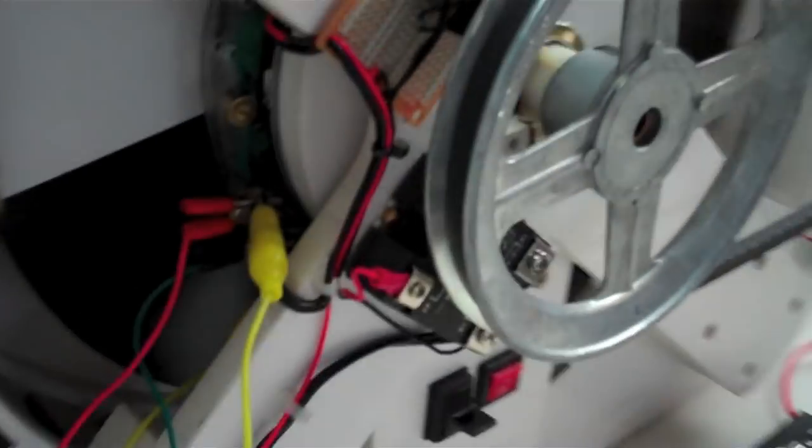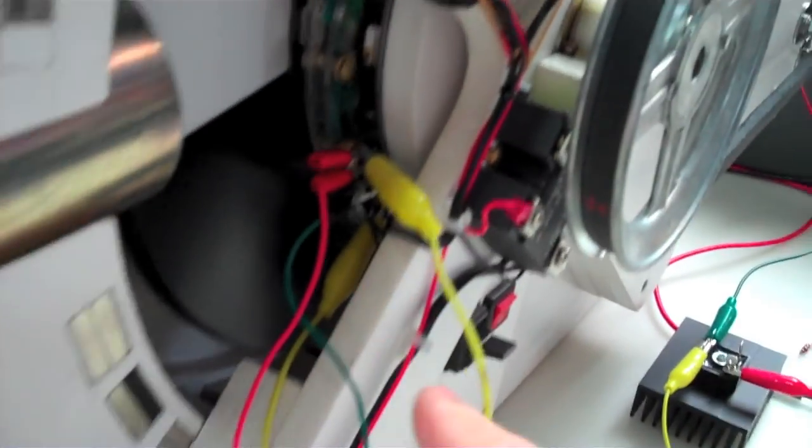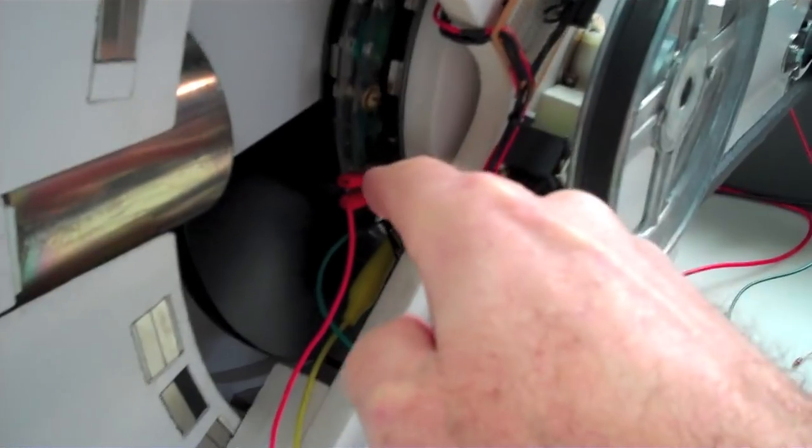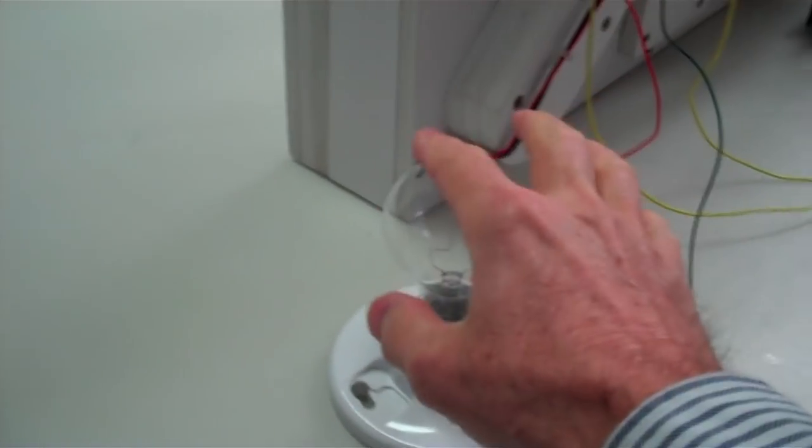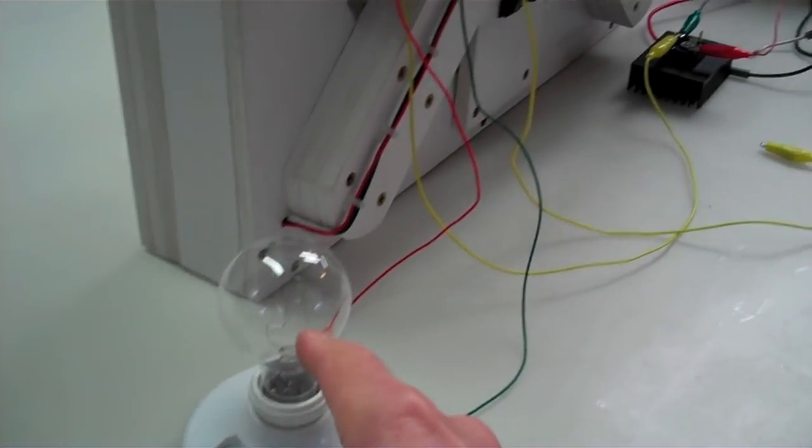And then over here in this rat's nest here, I've got direct connections to the three phase alternator. Two of the phases, let me step back here, two of the phases will run down here and come into this 40 watt bulb. So we'll light the 40 watt bulb.